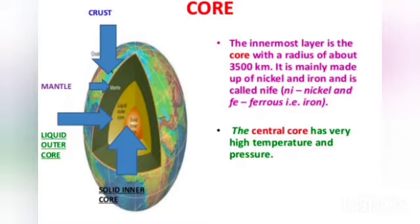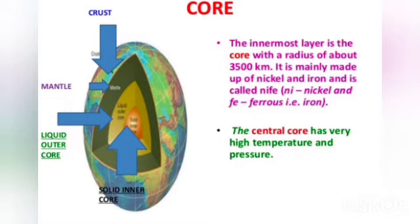Core is the innermost layer of the earth. It has a radius of about 3,500 km. The core is made up of nickel and iron and is called NIFE — Ni means nickel and Fe means ferrous, that is iron. The central core has very high temperature and pressure.